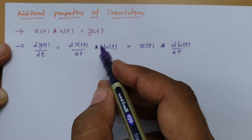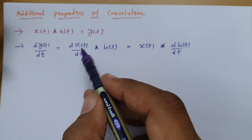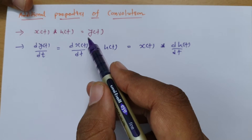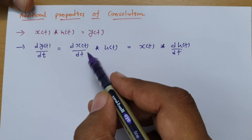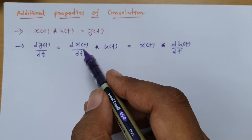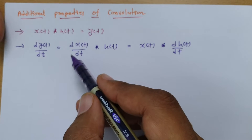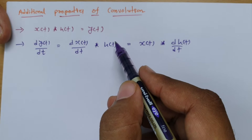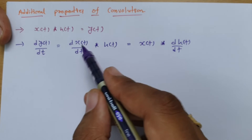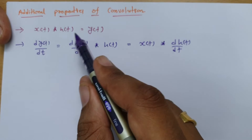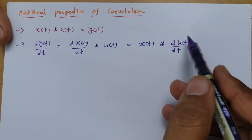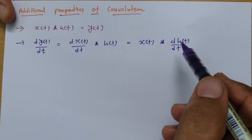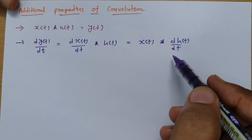Sometimes differentiation of x(t) is easier, so one should go for differentiating x(t). But if differentiating x(t) is complicated and differentiating h(t) is easier, then you can exchange the differentiation to h(t). This is a very useful property that you will use in many examples.